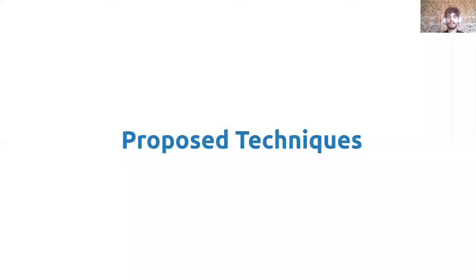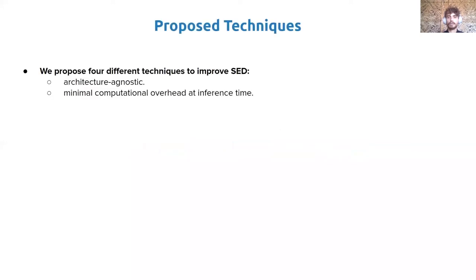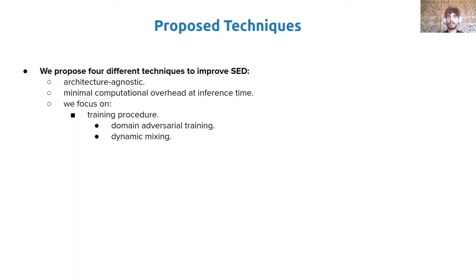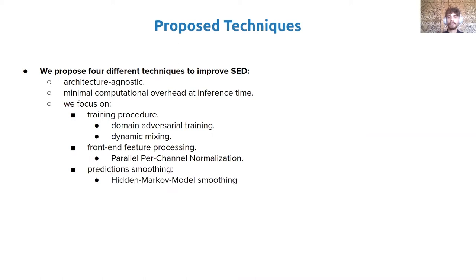We propose four different techniques for improving Sound Event Detection systems, which are feature-agnostic and bring minimal computation overhead at inference time. We focus on the training procedure and show that domain adversarial training and dynamic mixing can significantly improve performance, as well as front-end feature processing. We propose a novel parallel per-channel normalization layer and prediction smoothing with Hidden Markov Models.